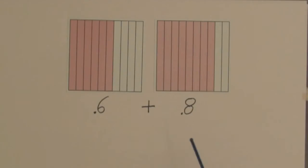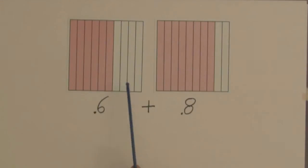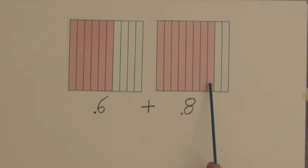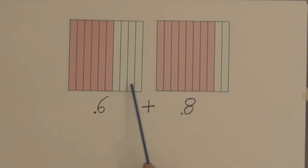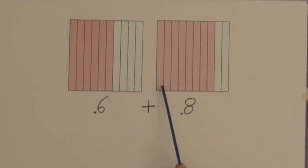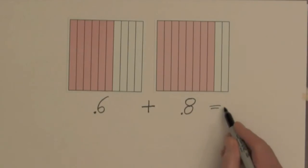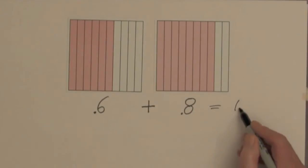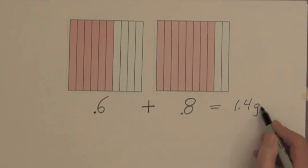Now one way to show the total amount: here we have six shaded parts. We need four more parts to form a whole, so we could take four parts from here, put them over here, and then we're going to have one whole square and four parts out of ten. And this is one point four gallons.